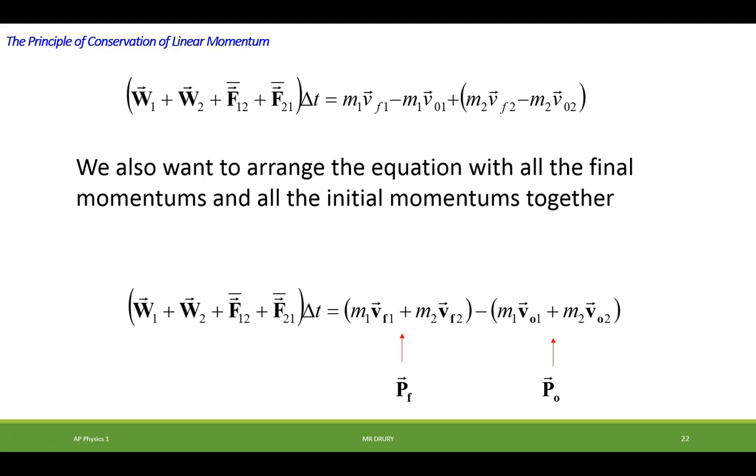Here it is again. So now what we'd like to do is rearrange the equation so the final momentums and the initial momentums are all together. So what I did is I got all the final momentums together. I took the final momentum here, this final momentum here, added them together, and I subtracted the initial momentums.